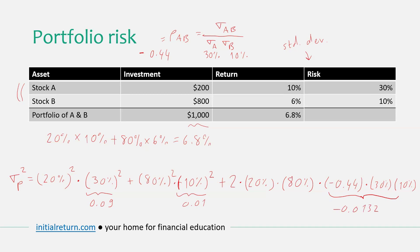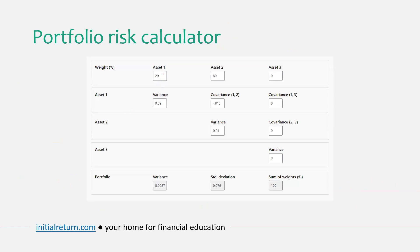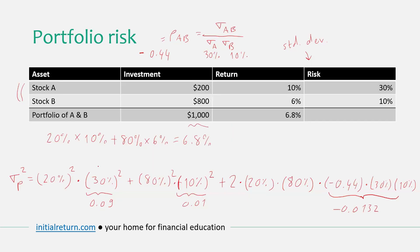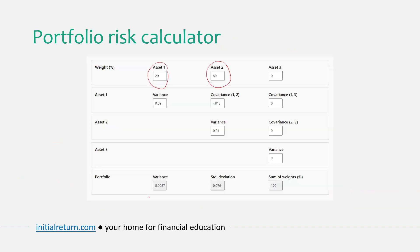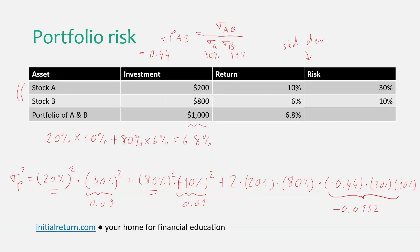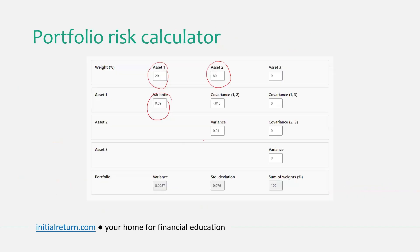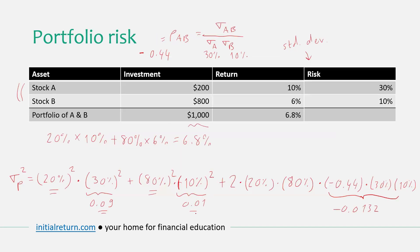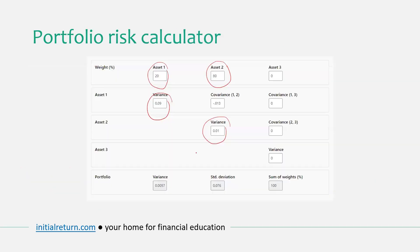On our website we have a handy portfolio risk calculator — if you put these numbers in, it will give you the portfolio risk so you can check your calculations. You enter the weight for the first asset (20%), weight for the second asset (80%), the variance of returns for each asset, and finally the covariance term. You can also use the same calculator for a three-asset portfolio. The link to this calculator is in the video description.